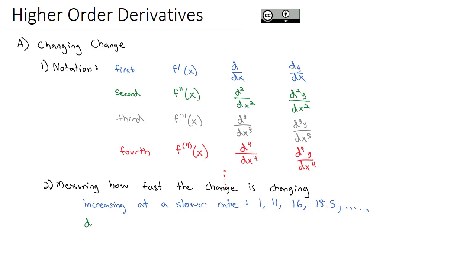We could also say something like 'decreasing at a faster rate.' We might start at 10, then the next number is 9, then 6, then 2. These numbers are decreasing, but the rate they're decreasing at is increasing — from 10 to 9 it only decreased 1, from 9 to 6 it decreased 3, then it decreased 4. It's decreasing at a faster rate. So we're talking about how fast the change — the increase or decrease — is changing, whether at a faster or slower rate. That's the idea of a higher-ordered derivative.